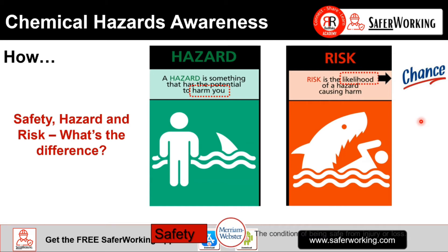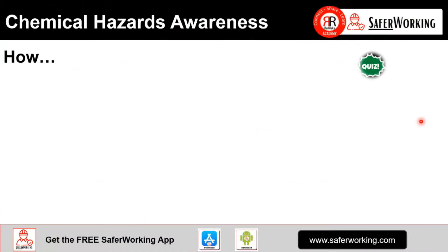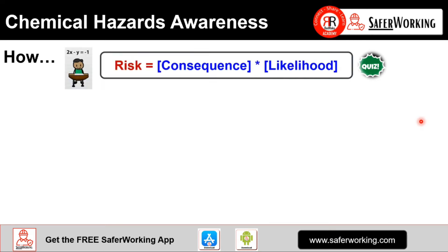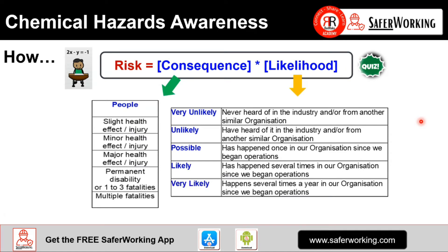Going into how a bit more — the risk equation is consequences times likelihood. When we look at consequences from a hazardous perspective, we're looking at harm to people, ranging from slight health effects and injuries through to multiple fatalities. Likelihood or probability can go from very unlikely to very likely. The product of consequence and likelihood is the risk.